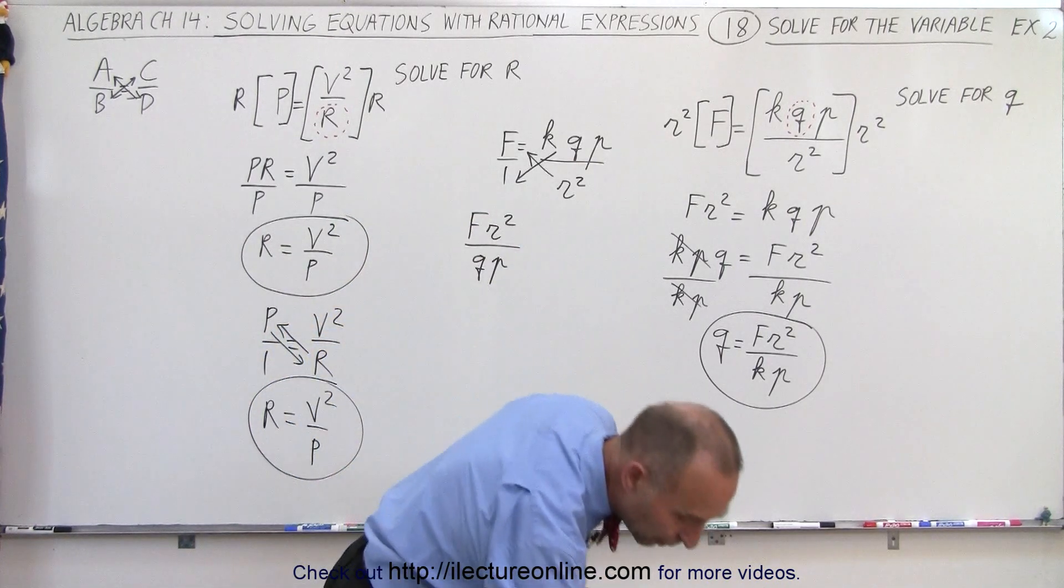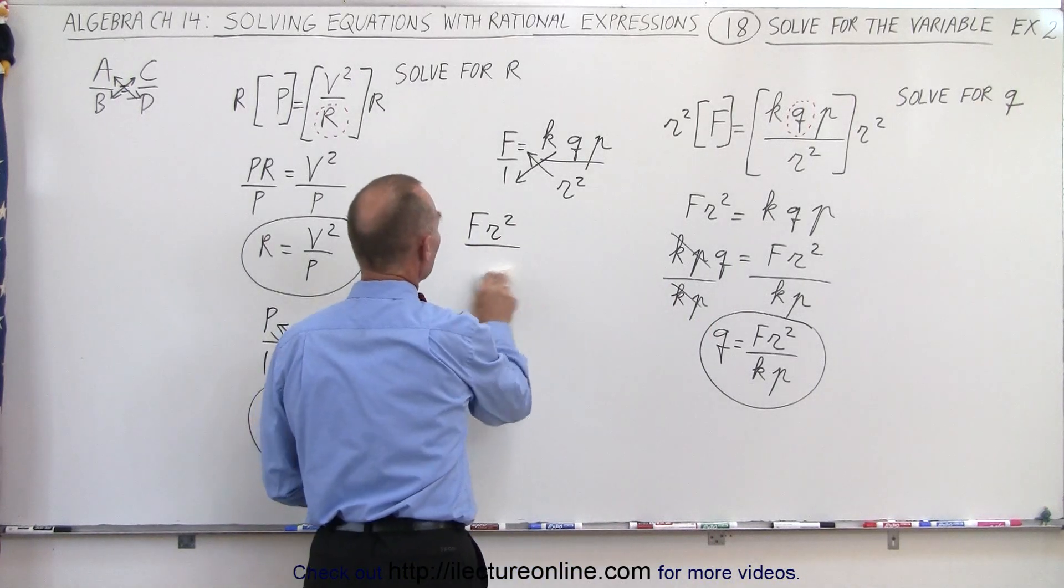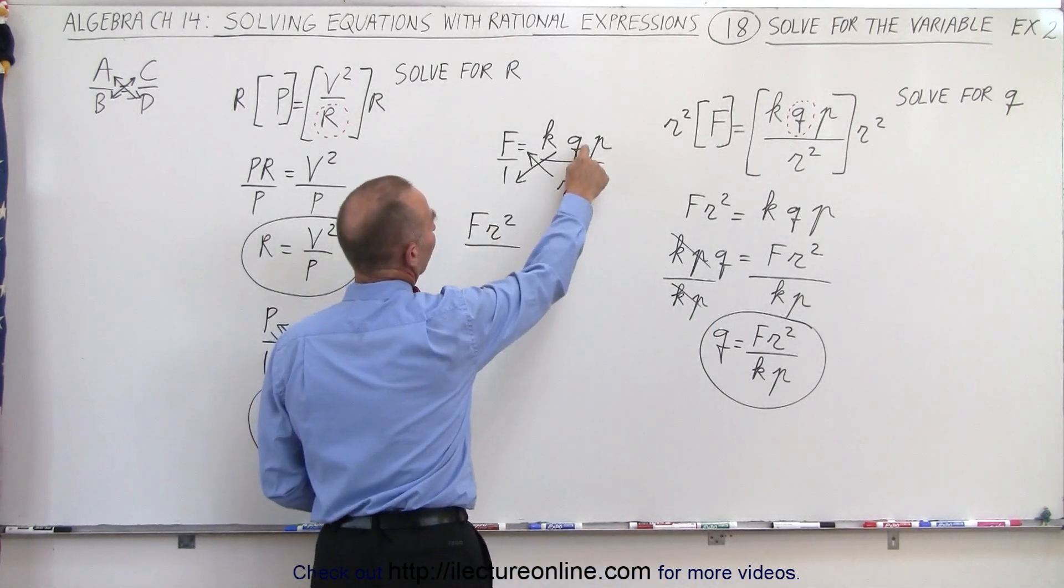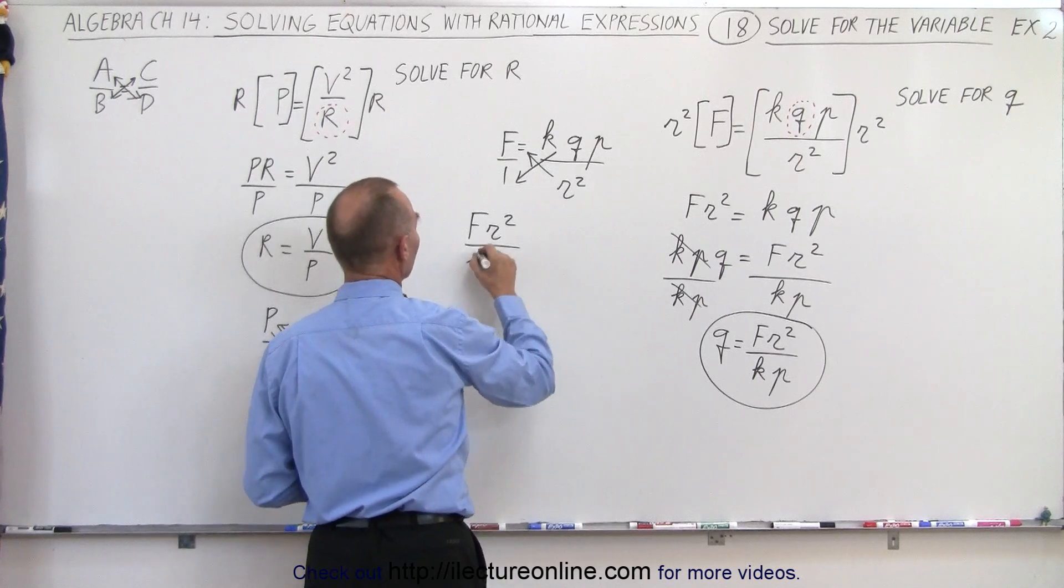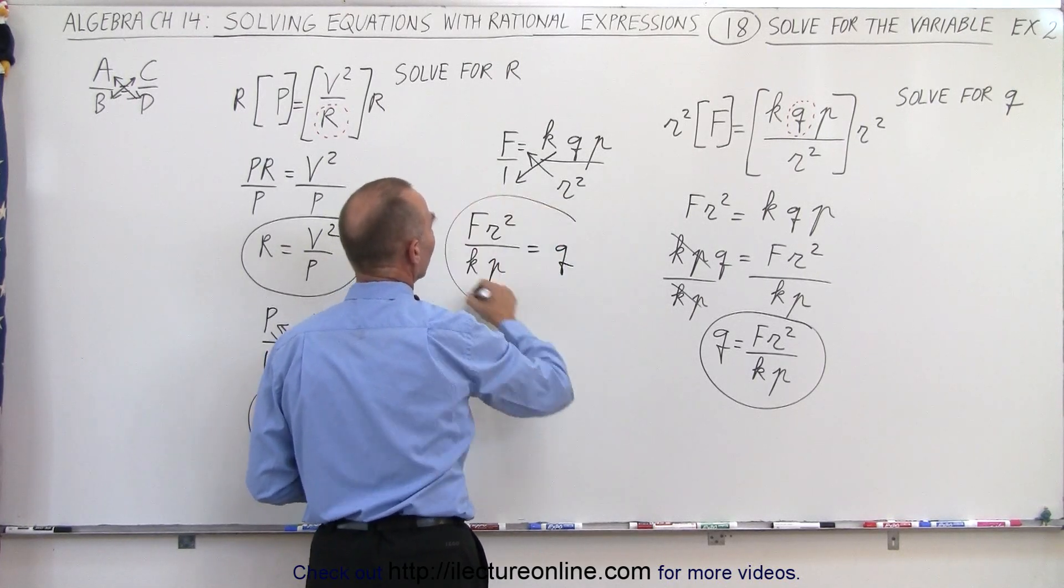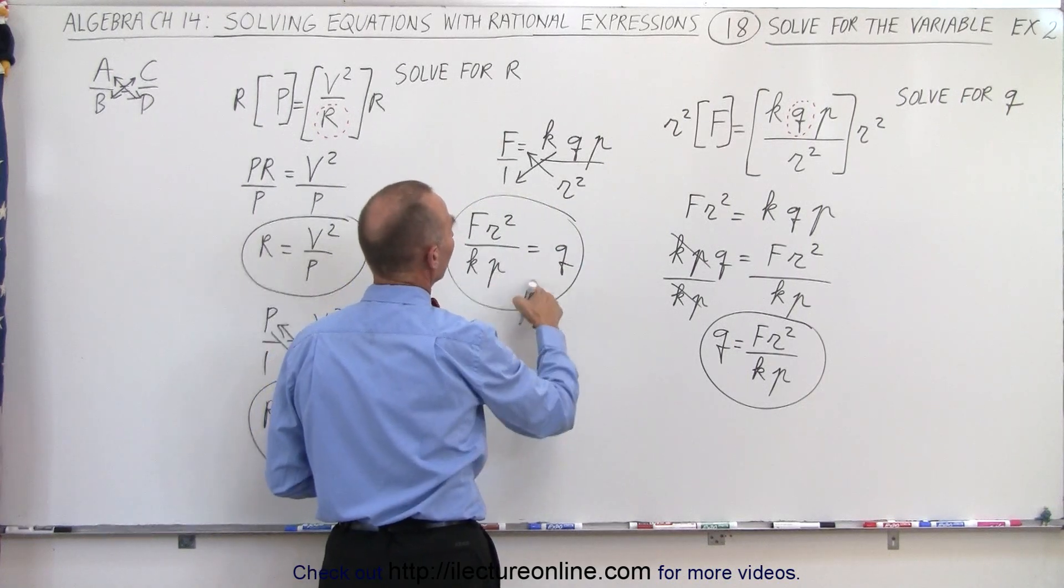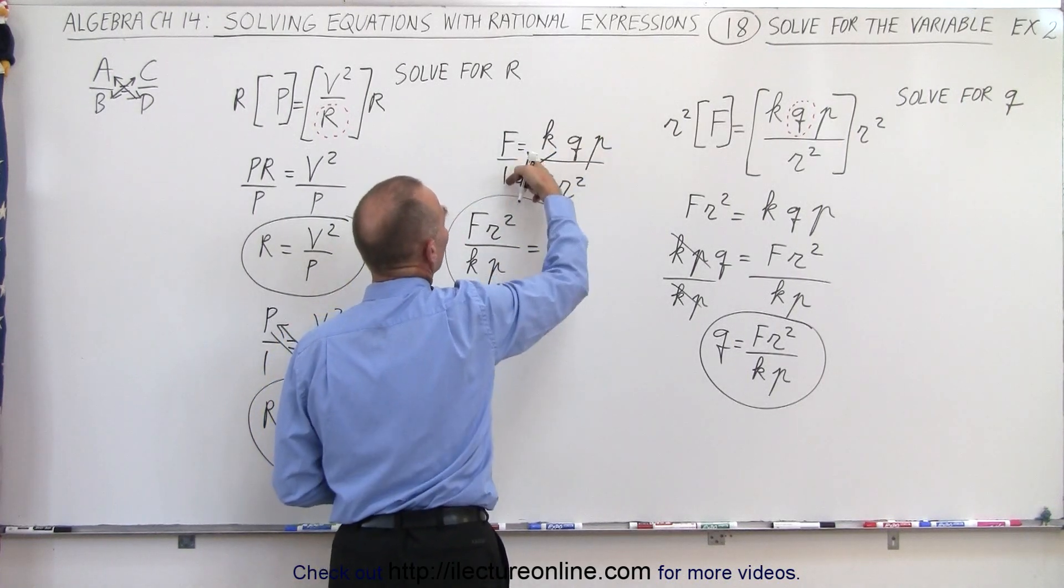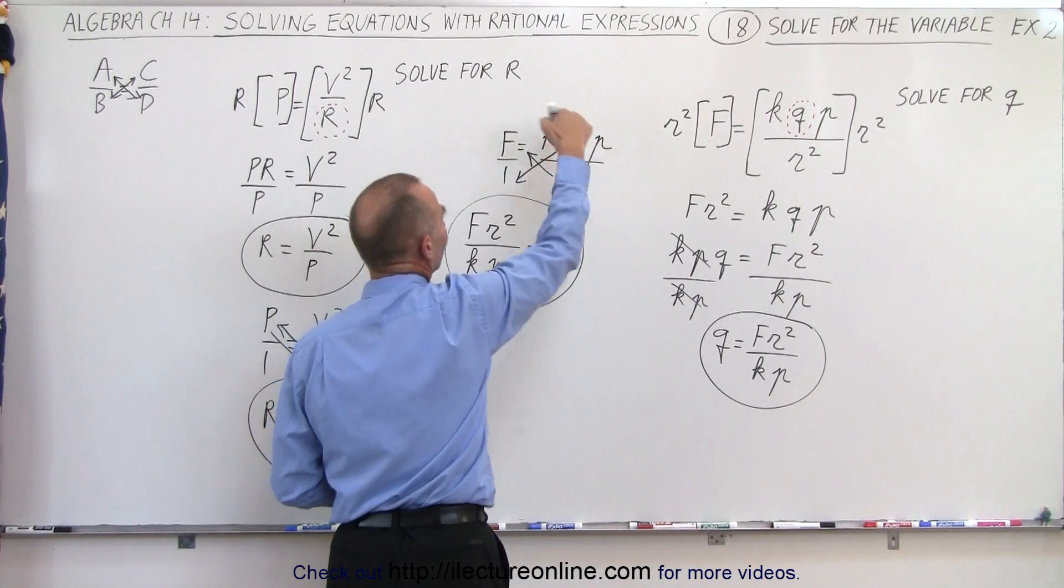Again, I have to keep in mind what variable I'm solving for. I'm solving for q. I'm moving the k and the p across. So f r squared over k times p, and that equals q. And again, in one step, we could solve for the variable. So again, I move the k and the p this way, the r squared that way, isolate the q.